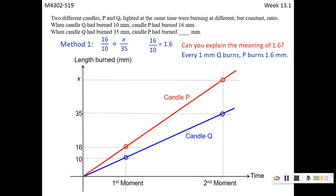Now if we were to look at it graphically, because we are going to connect this to algebra, so we can represent each candle as a line, representing the length burn versus time. The blue line is for candle Q, the red line is for candle P. Now can you help students see the 1.6? It's 16 over 10. But what does it really mean?